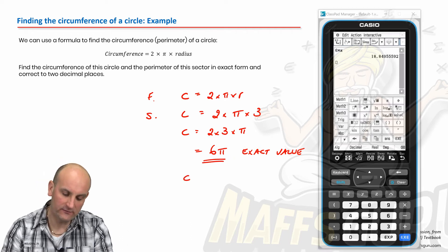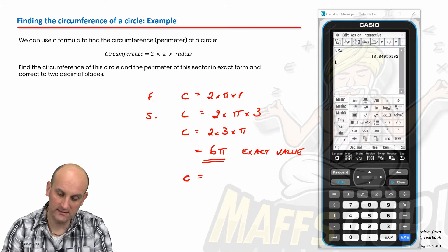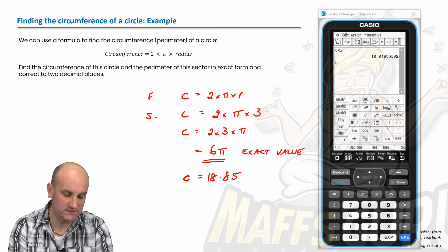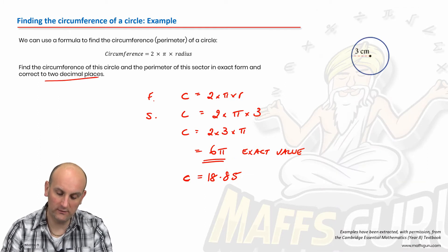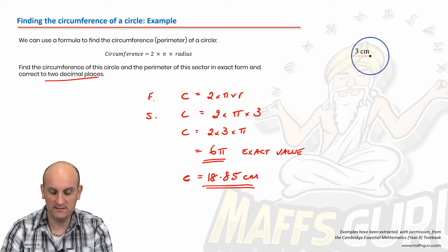And that gives me that the circumference of my circle is equal to 18 points. Now, the decimal place is eight, five, because it says correct to two decimal places. And we would need to make sure that we know what our units were and they were centimetres.